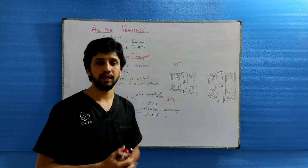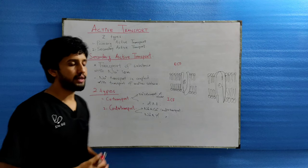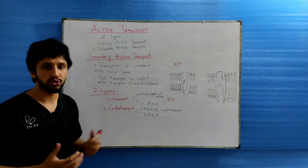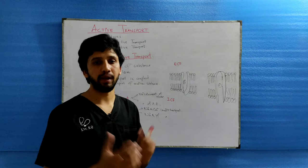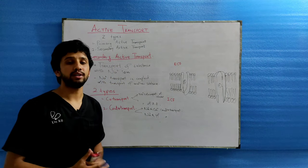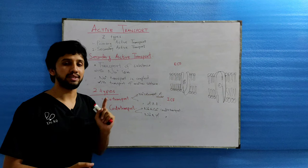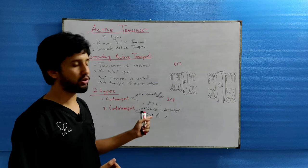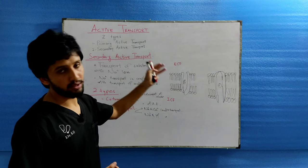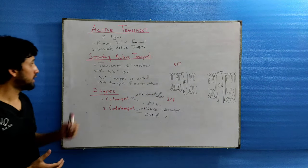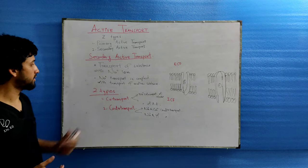We have discussed the primary active transport. Now we will discuss secondary active transport. Secondary active transport is the transport of the sodium ion along with another substance with the same carrier protein. Whenever there is a transport of sodium across the membrane, there will be simultaneous movement of another molecule with the sodium, either in the same direction or in the opposite direction.